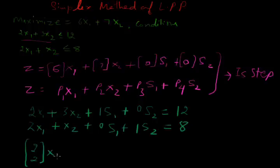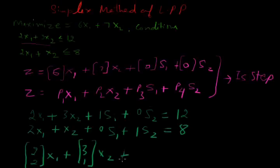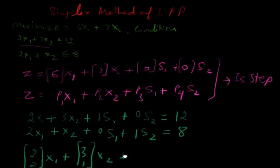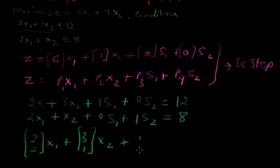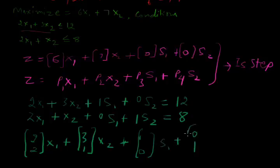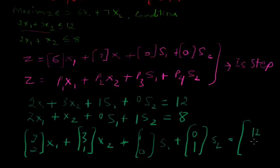x1 will be common, 3, 1 is a column matrix. x2 will be common, and then we write 1, 0 for s1 and 0, 1 for s2, which is equal to 12, 8.